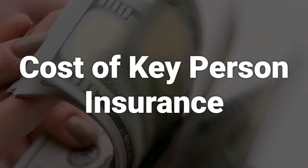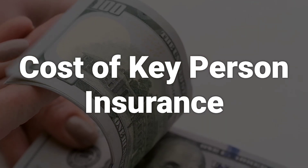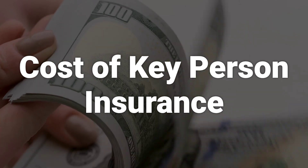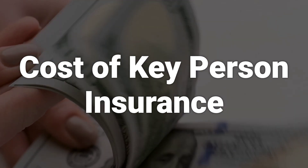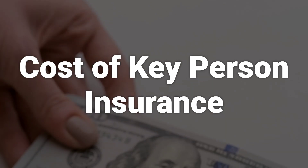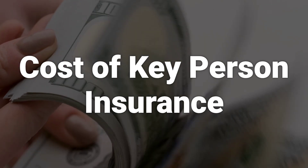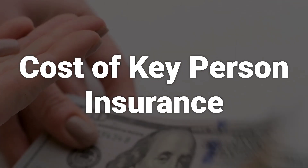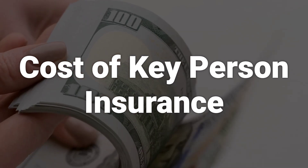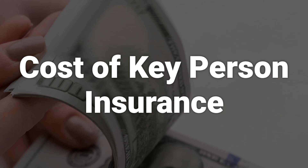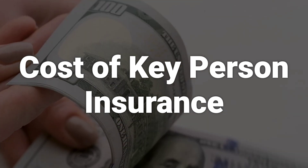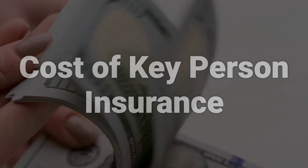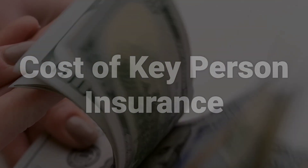How much insurance a company needs will depend on the size and nature of the business and the key person's role. It's worth asking for quotes on $100,000, $250,000, $500,000, $750,000, and $1 million policies and comparing the costs of each. The cost will also depend on whether the company buys a term life policy or a permanent life policy — term life is almost always significantly cheaper. In addition, the cost of coverage will vary based on factors such as the health of the key person, their gender, their age, the type of policy, the amount of coverage, the type of company, its structure, and the industry it is part of.